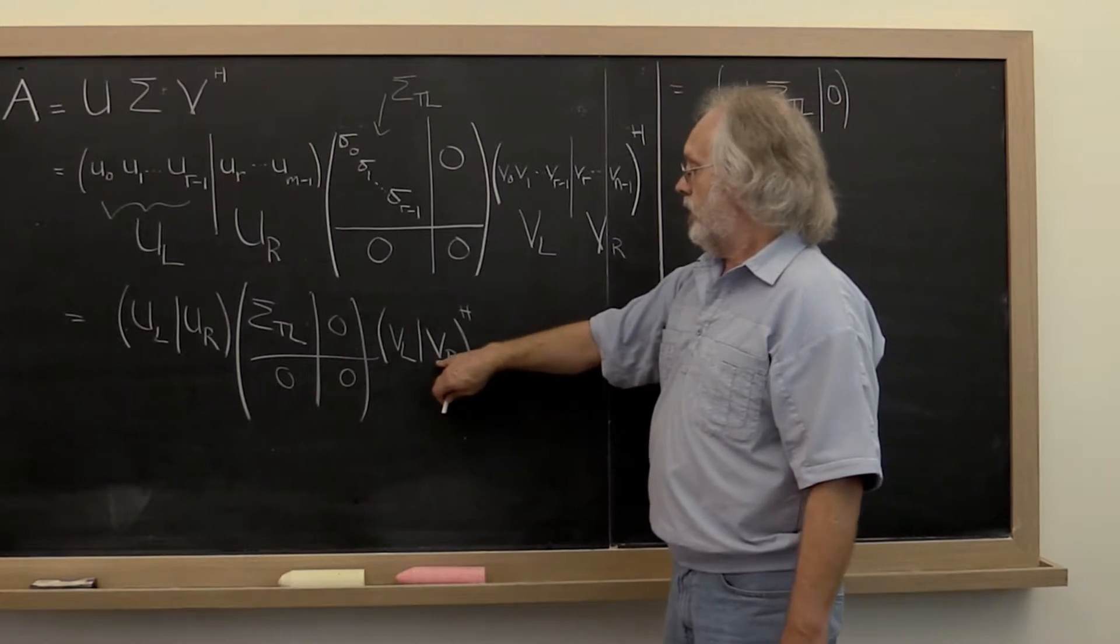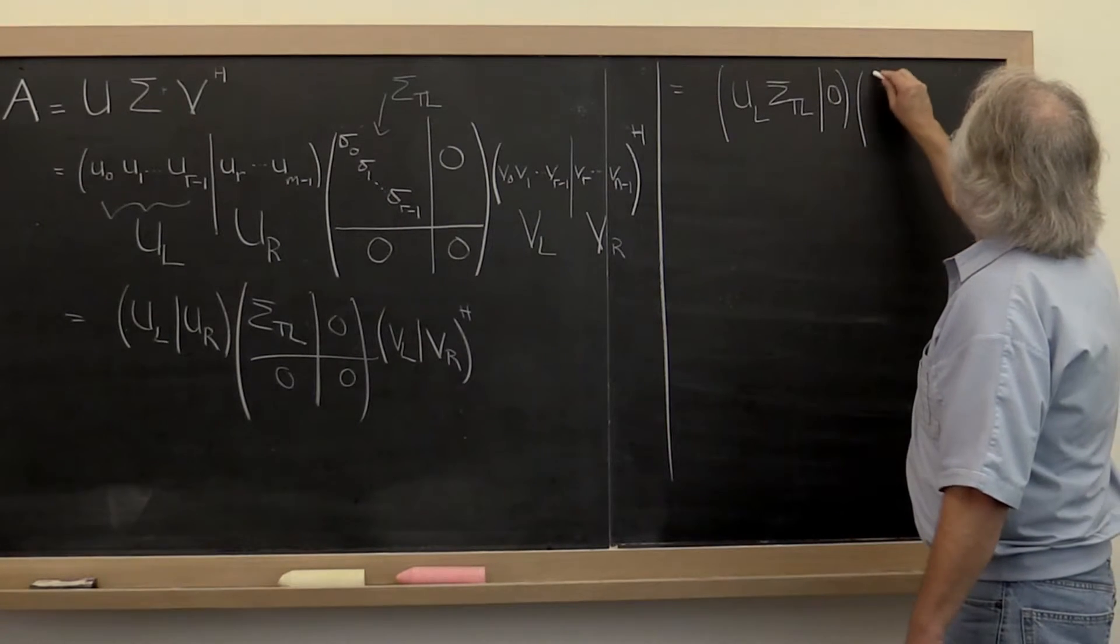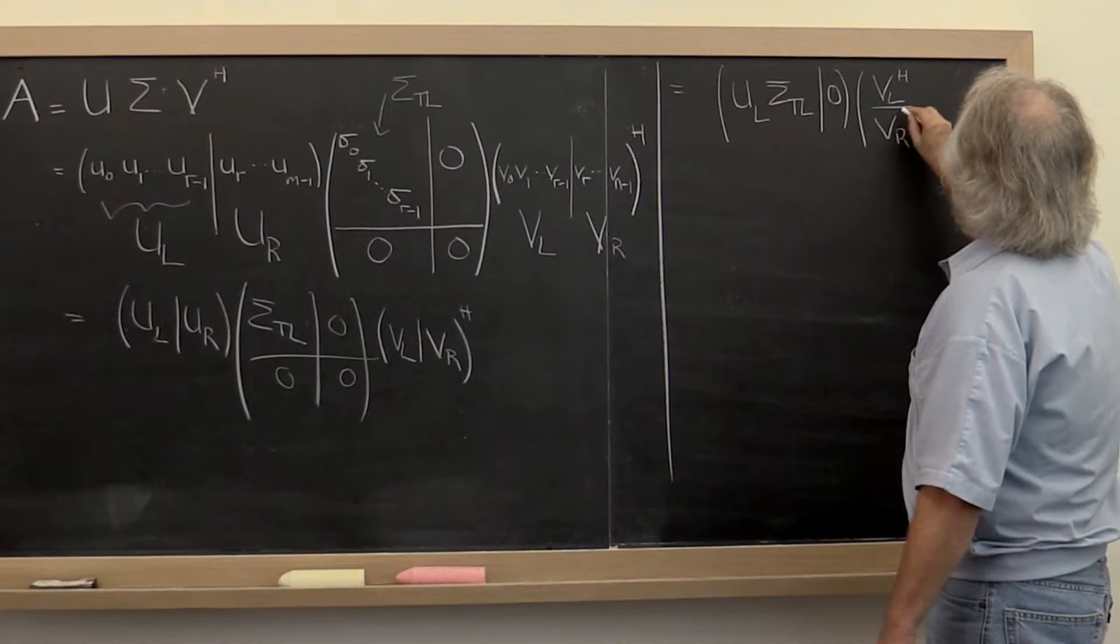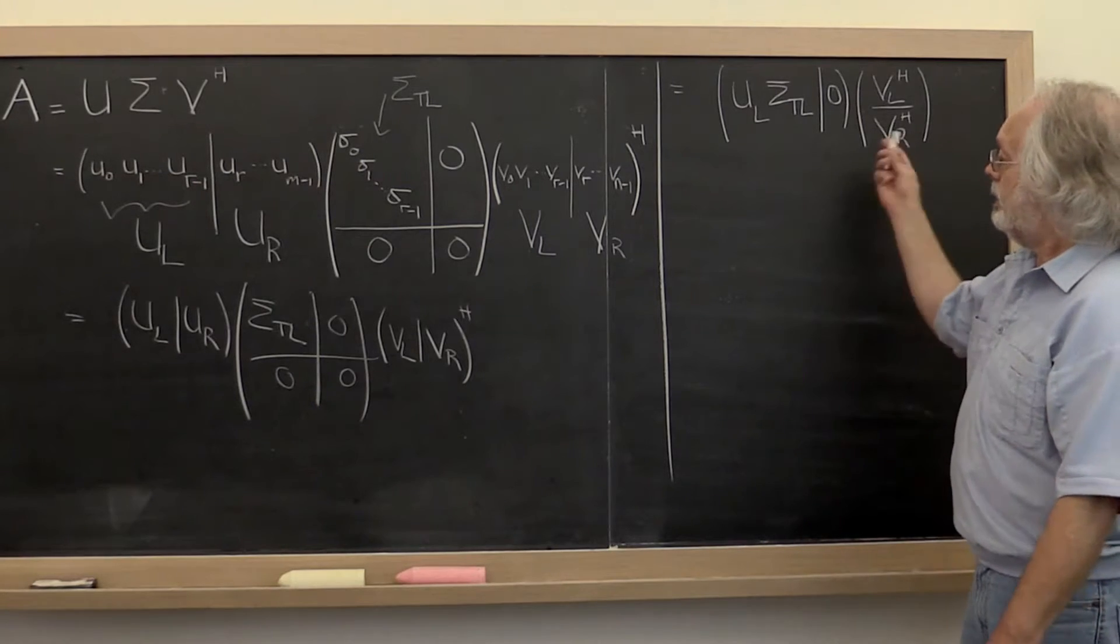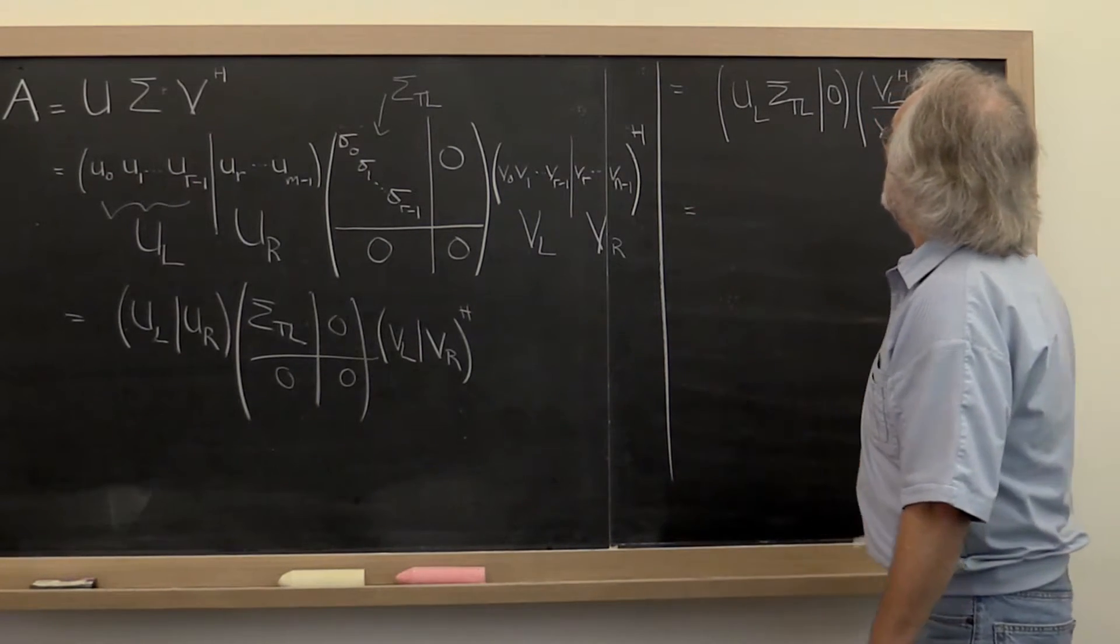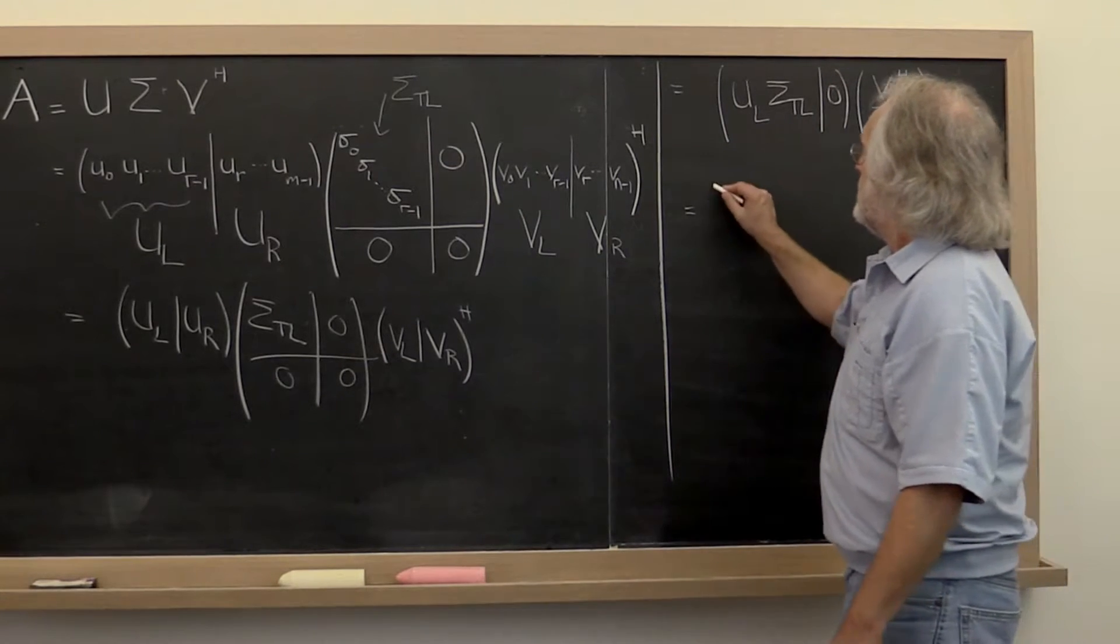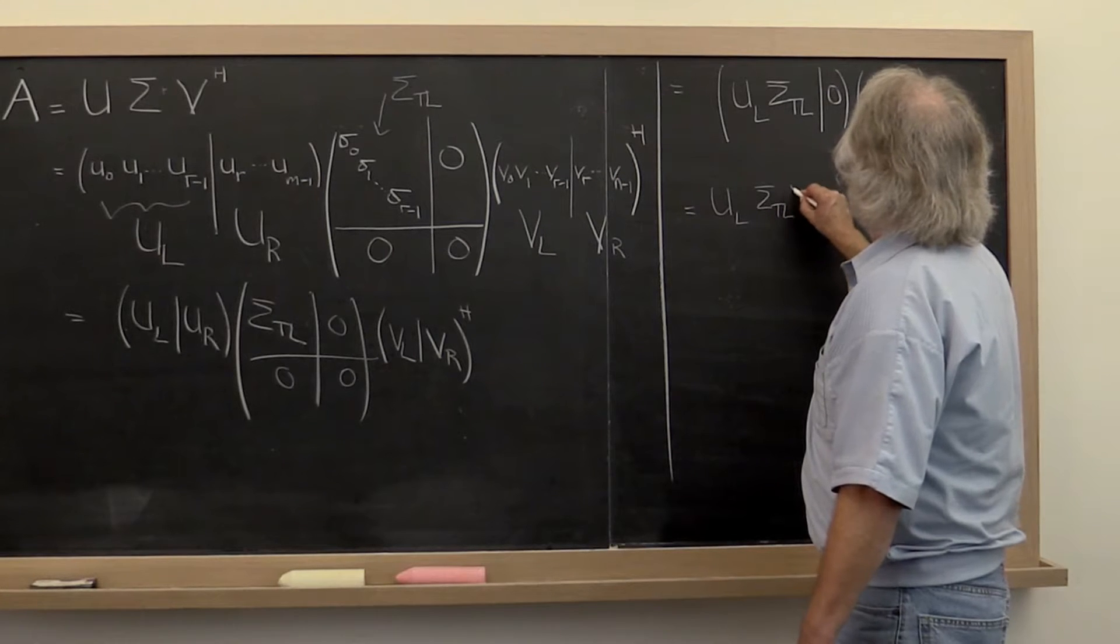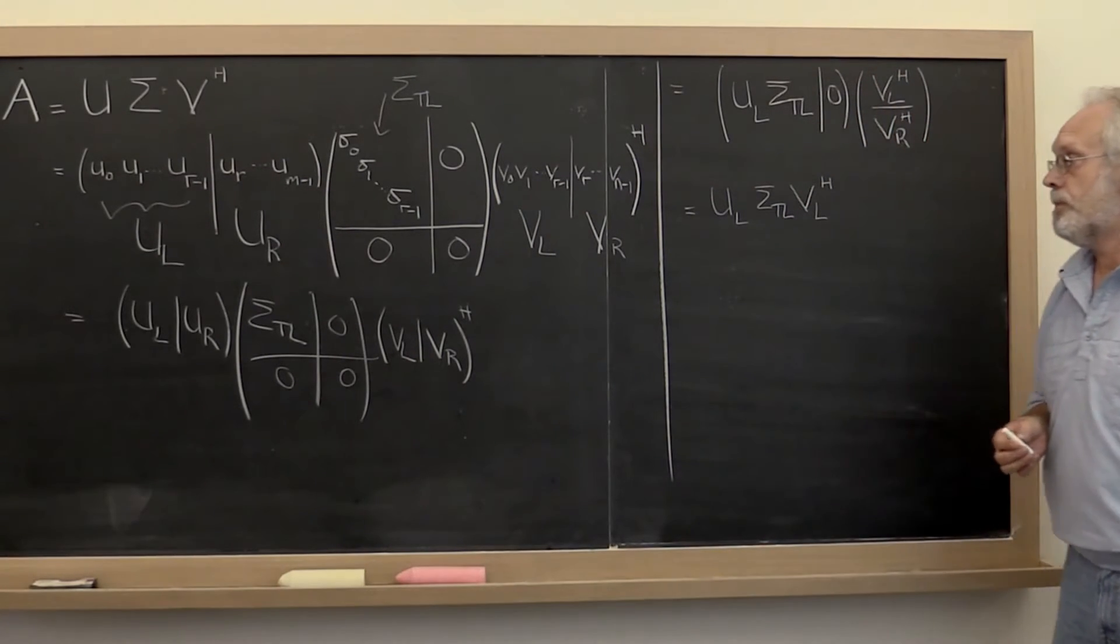And then if we take the Hermitian transpose, this partitioned matrix gives us V_left Hermitian transpose and V_right Hermitian transpose. If we now multiply this out, we get this times that plus this times that. Therefore we get U_left times sigma_top_left times V_left Hermitian transpose.